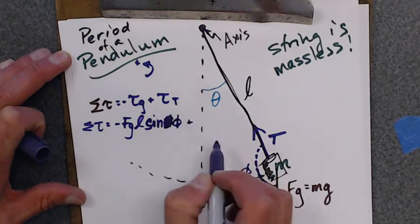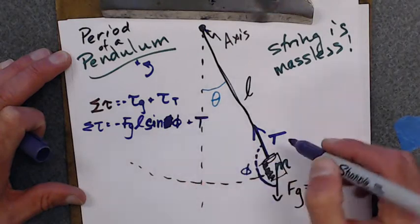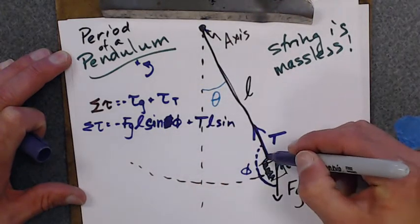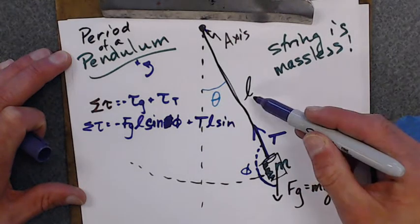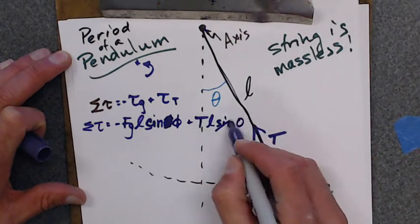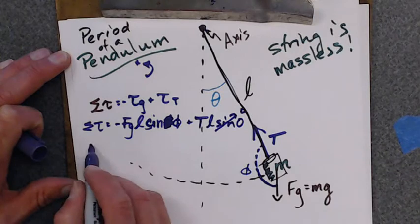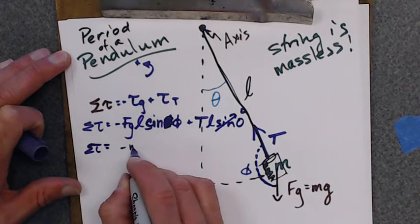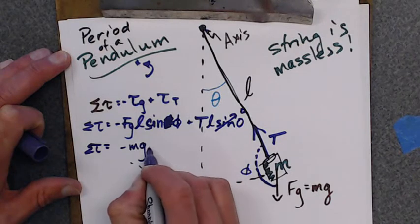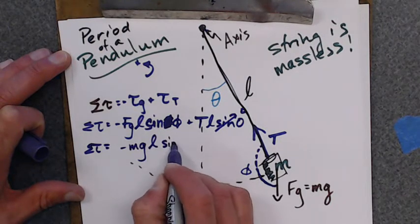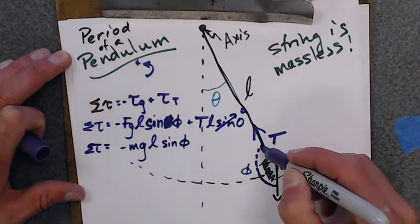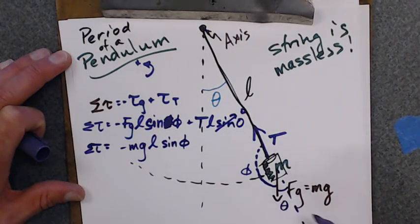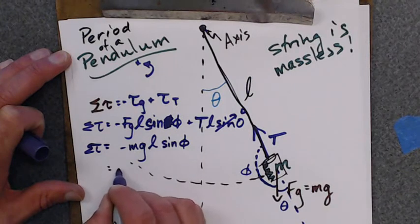Plus the torque due to the tension. So that's T times the lever arm, which is at L, times the sine of the angle between them. But the angle between the tension and the lever arm is zero. The sine of zero is zero. So now the sum of my torques are going to equal negative the force of gravity, which is mg times L times the sine of this angle phi.